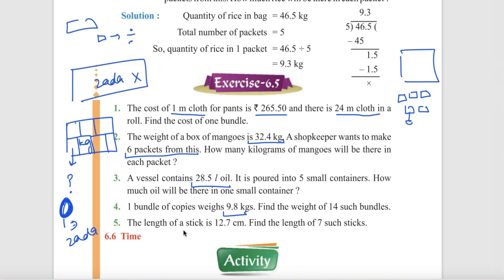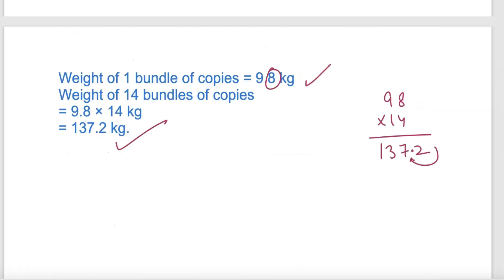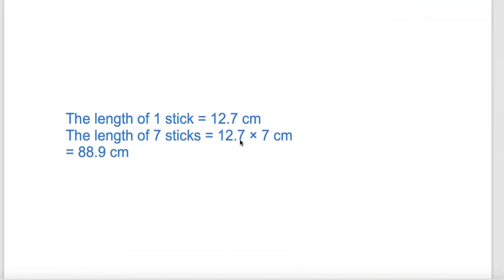The length of a stick is 12.7 cm. Find the length of 7 such sticks. Simple, multiply by 7. 12.7 times 7. If you want to multiply, the decimal is 1 digit, so multiply and place the decimal. The answer is 88.9 cm.